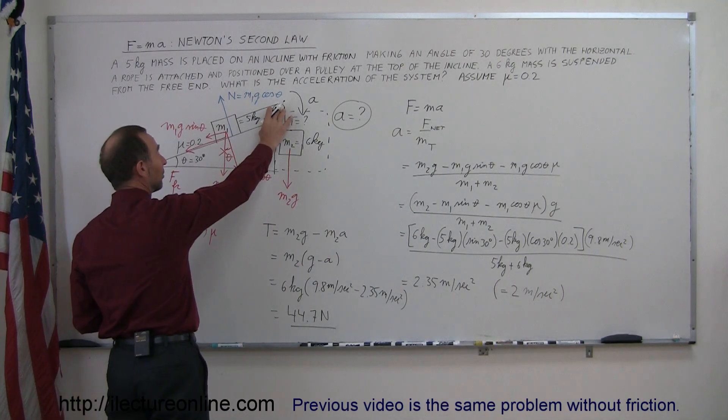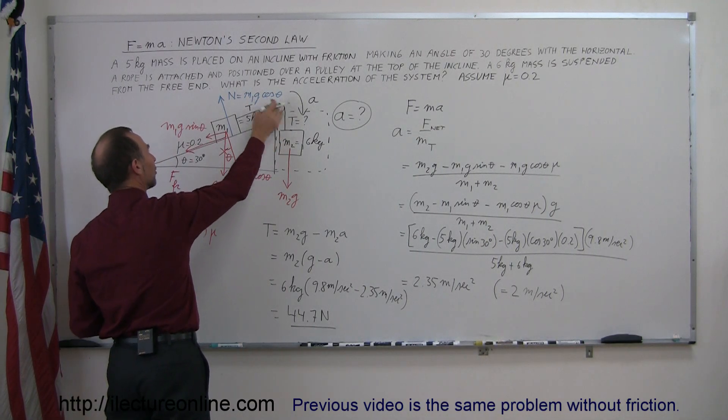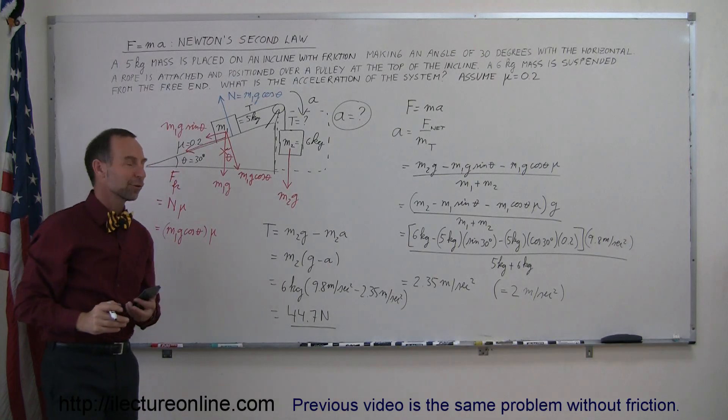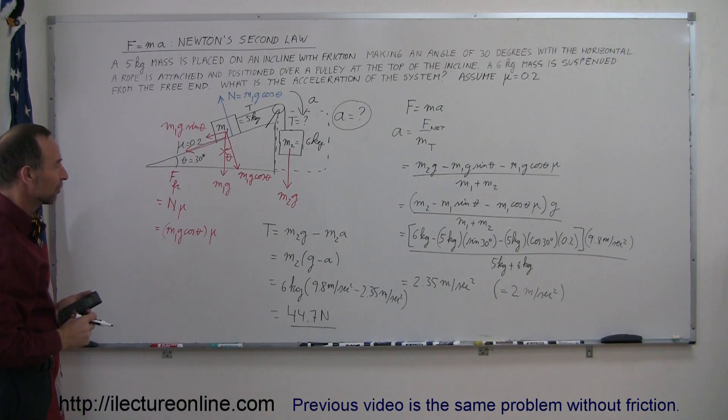Of course, since this pulley has no mass and no friction, we can say that the tension on the other side on the string is also 44.7 newtons. And that's how you do those types of problems.